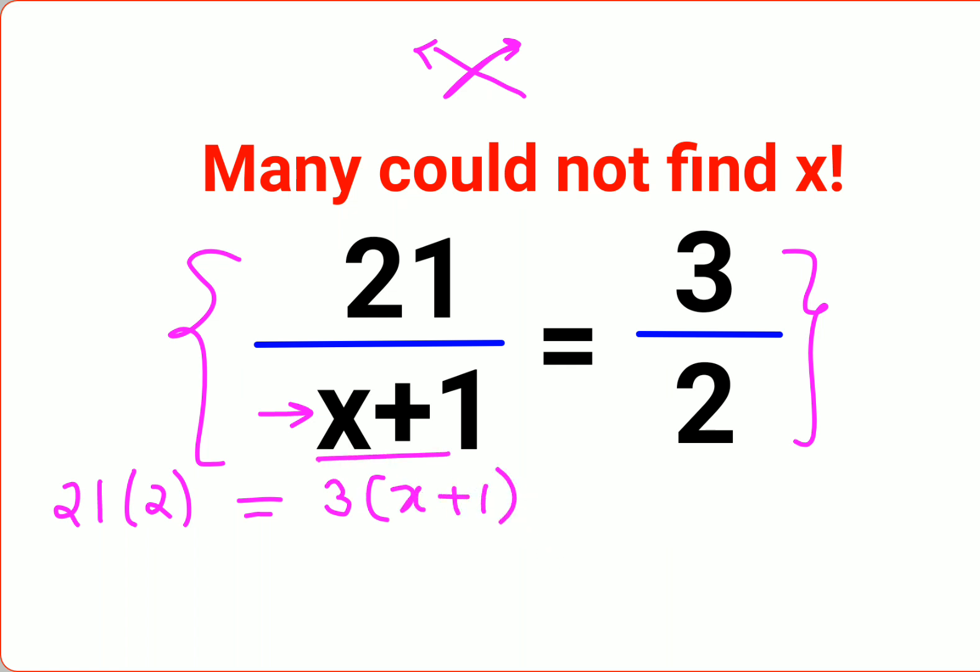So 3 with this denominator. Now what you get is 42 equals 3x plus 3.